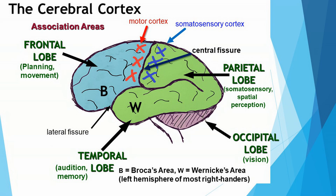Broca's area is one of the speech centers. If there's damage to Broca's area, maybe through an accident or a stroke, then the individual is still able to comprehend speech and to produce meaningful speech, but it will be stilted, leaving out many of the little words like 'a' and 'the.' It will not be fluent, but the individual would still be able to follow instructions. If I asked the individual to please put this book on the table, they will comprehend what I'm saying, and they would be able to do it.